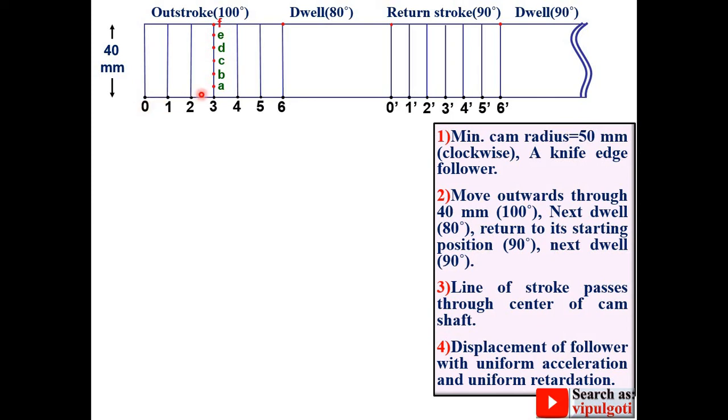Now join this 0-A with the straight line, then 0-B and 0-C. Similarly you can understand this remaining work. Now mark the intersection points as A, B, C, D, E and F.